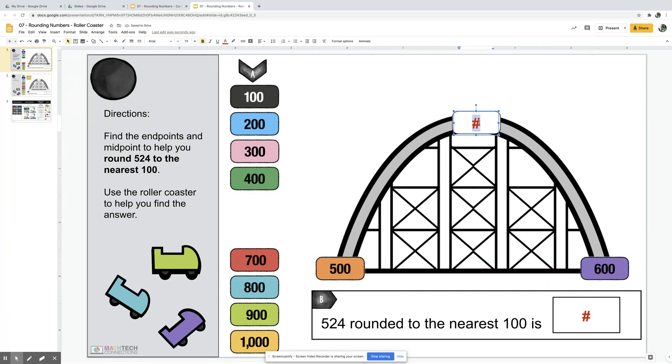Students decide which little card best represents where 524 is located. Since it is before 550, it would be one of these, and students can see that 524 is going to round to 500.